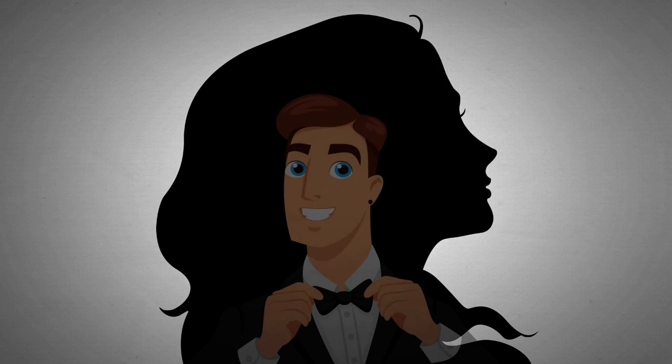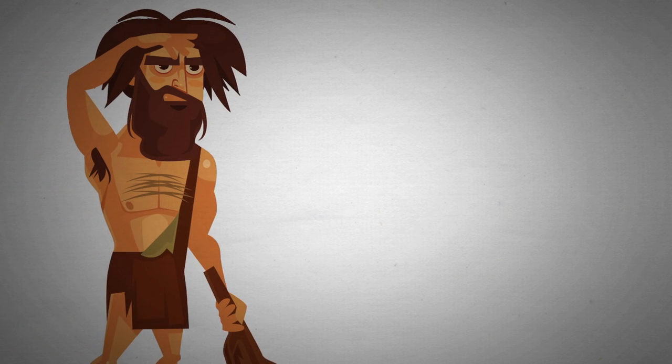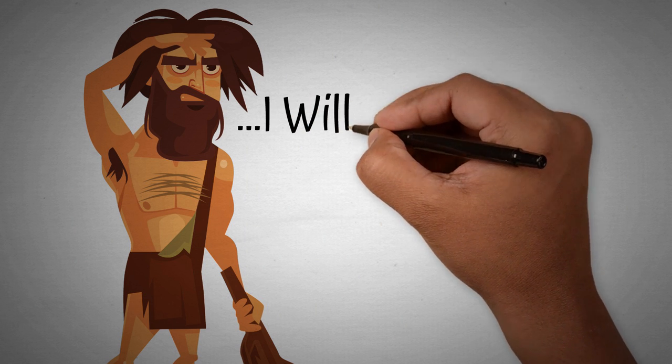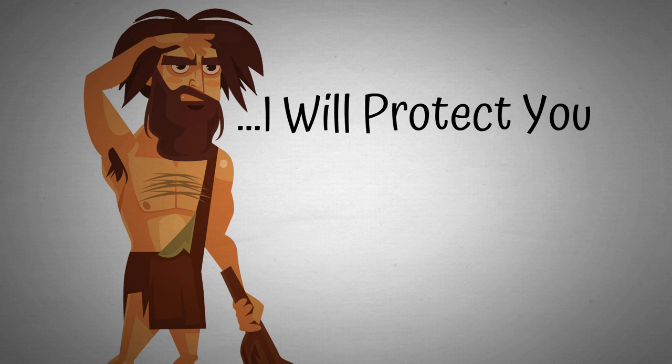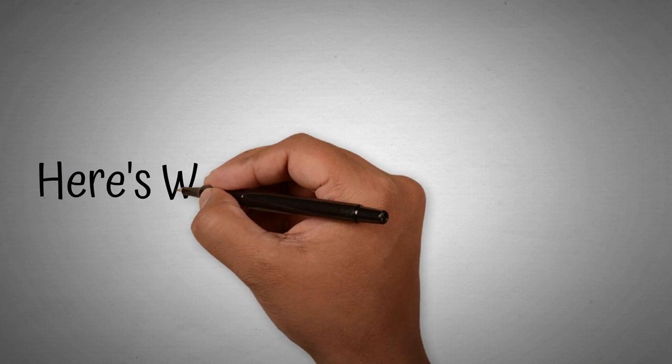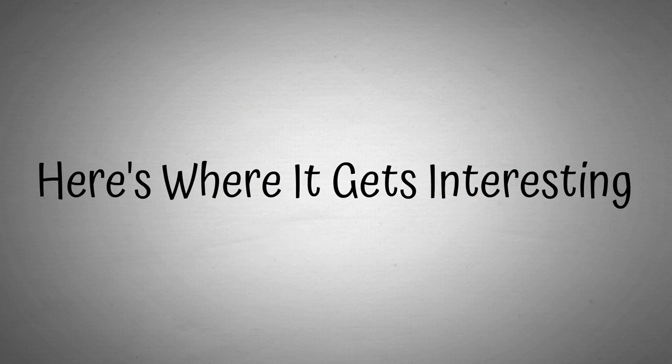Number three: Pretty much every girl on the planet has a built-in sort of fairy tale inside of their head that involves a magical prince who comes and sweeps her off her feet and takes care of her and protects her. And as men, something that is built into our programming or built into our DNA is to be the prince that the girl is looking for, or in other words, to be the guy who protects her. But here's where it gets interesting.